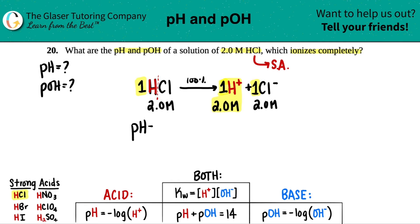So pH equals negative log of 2.0. So let's find out that pH first. Calci time, negative log of 2.0.